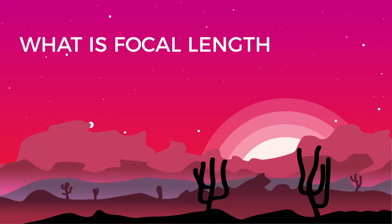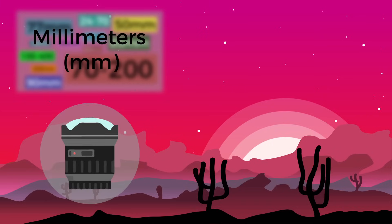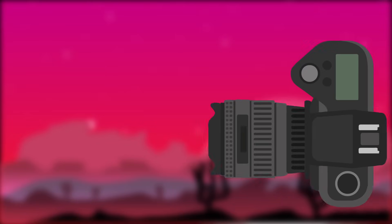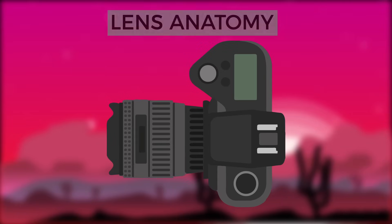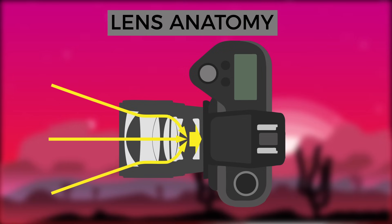What is focal length? Focal length, usually represented in millimeters, is a basic description of a photographic lens. The measurement is not the length of the lens itself, but actually a calculation of the optical distance from where all light rays converge inside the lens to the image sensor of the camera.